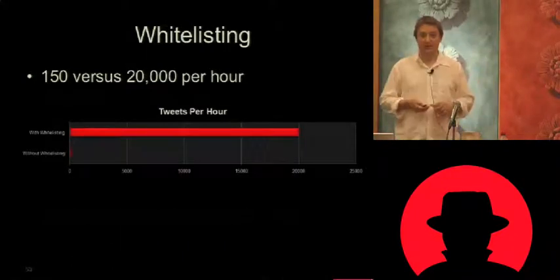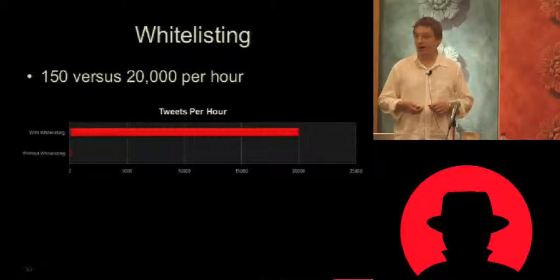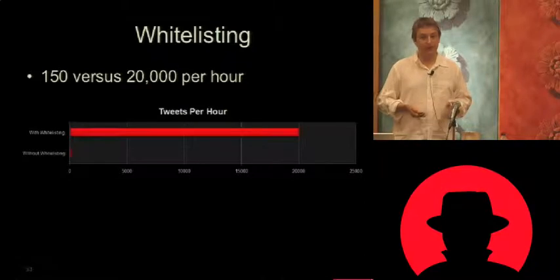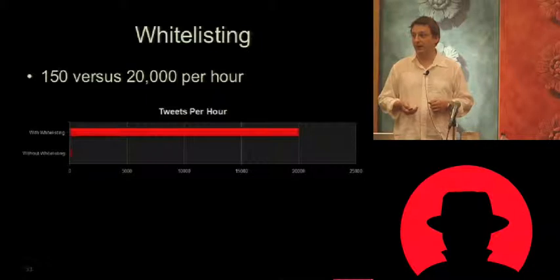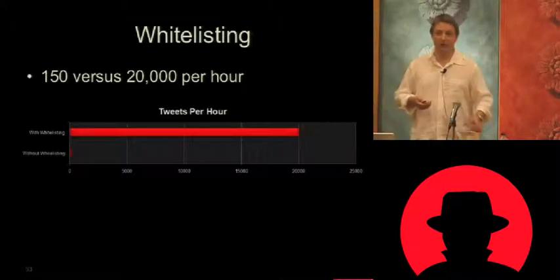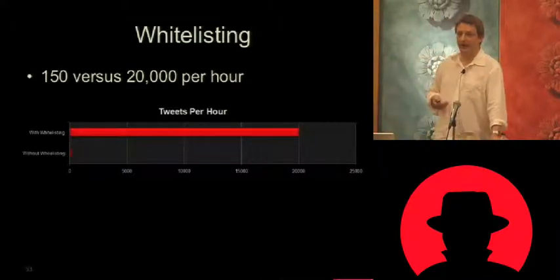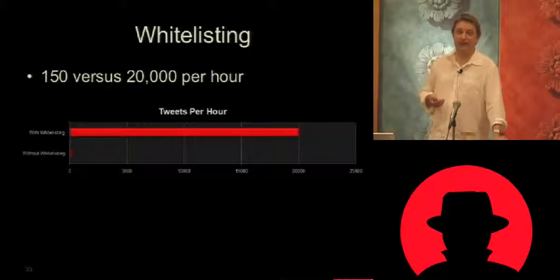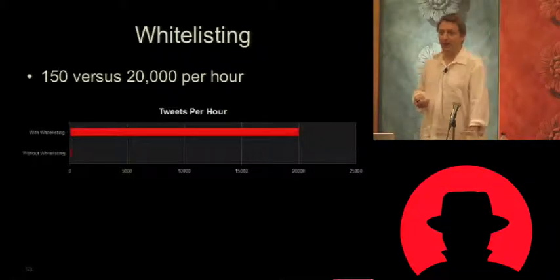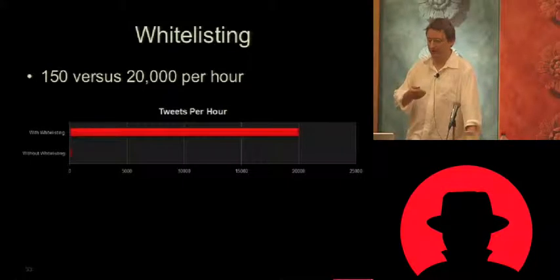That's where whitelisting comes in. You can go from 150 API calls to 20,000 in an hour. You have to apply for that via Twitter, but they were pretty good about it. I said I'm a security consultant doing data analysis and I'd like to be whitelisted. I thought it would take forever or I'd get a no — but they basically said 'yeah, sure, here you go,' which meant I could run some pretty large graphs.